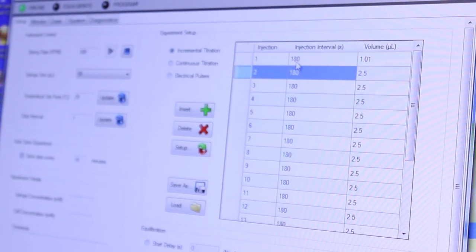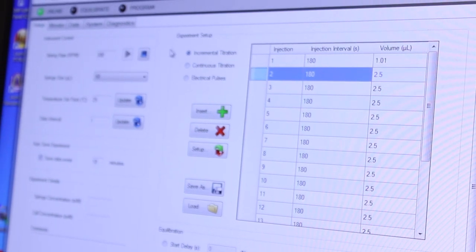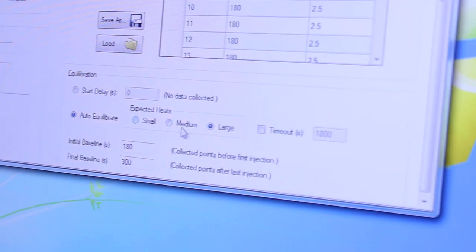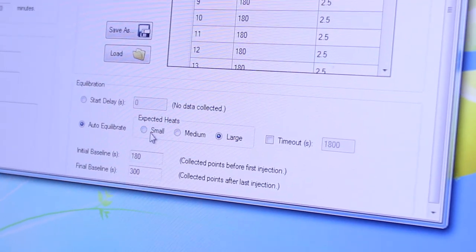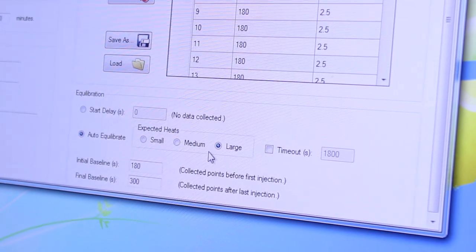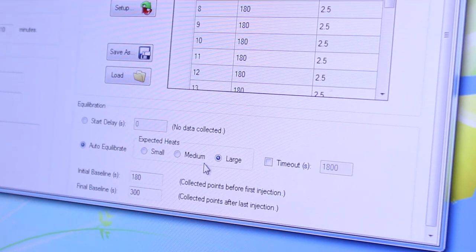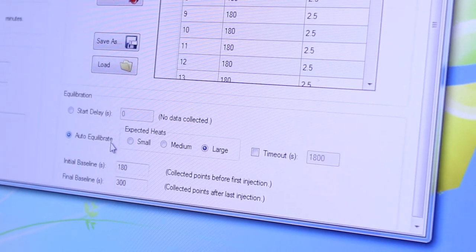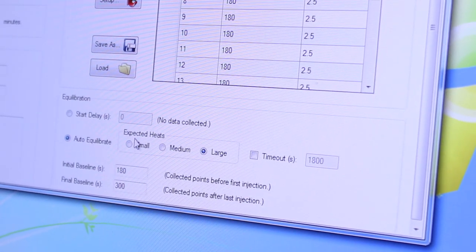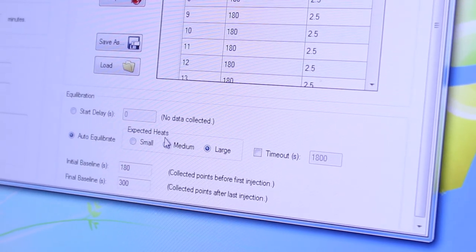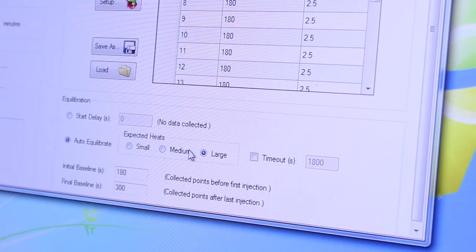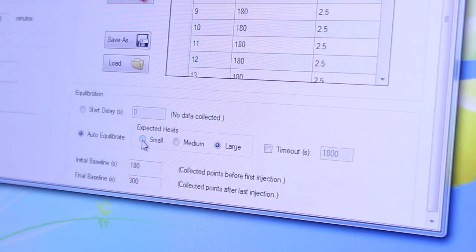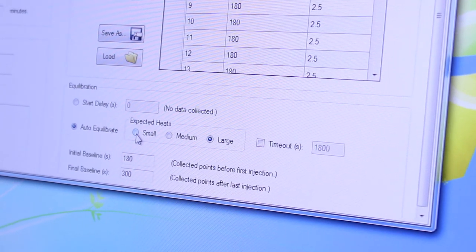The instrument is already starting to equilibrate but we can use this auto equilibrate option down here to help ensure that the instrument has fully equilibrated in terms of temperature stability before starting the experiment. The three options here for expected heat small, medium and large basically set how much error is acceptable before starting the experiment.